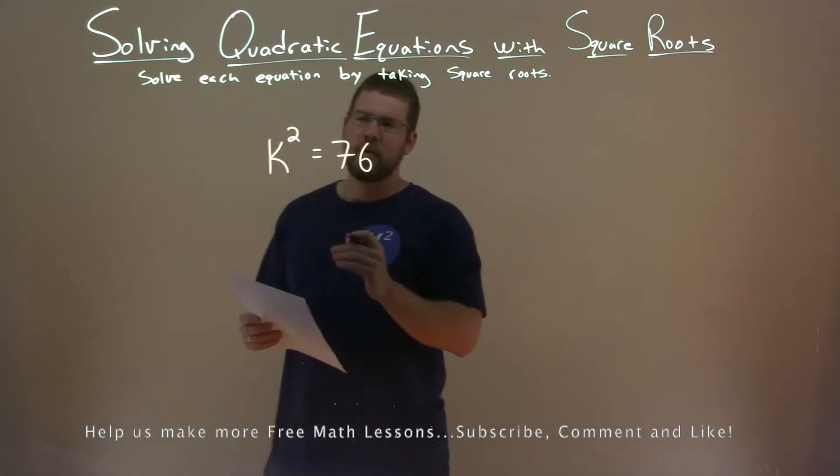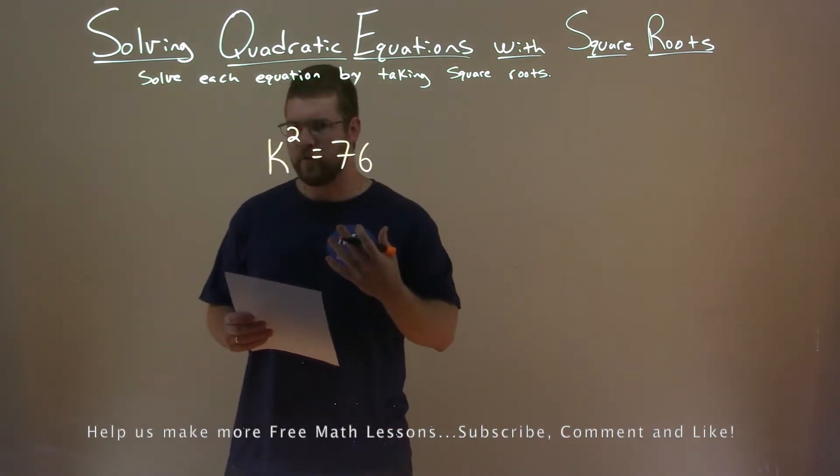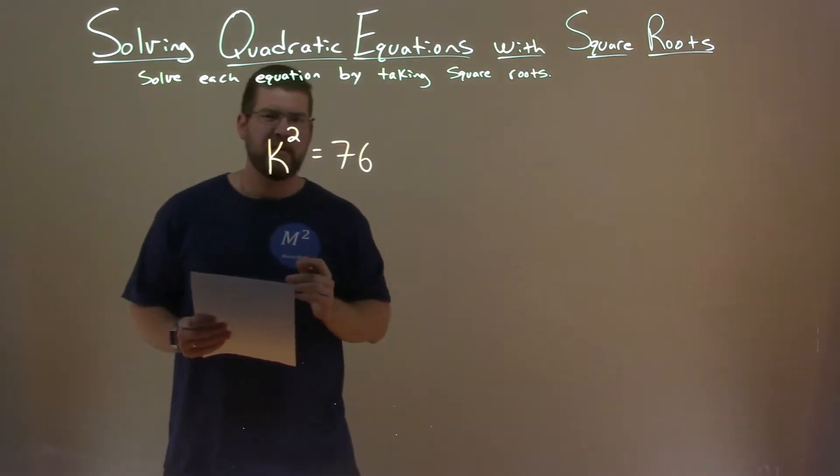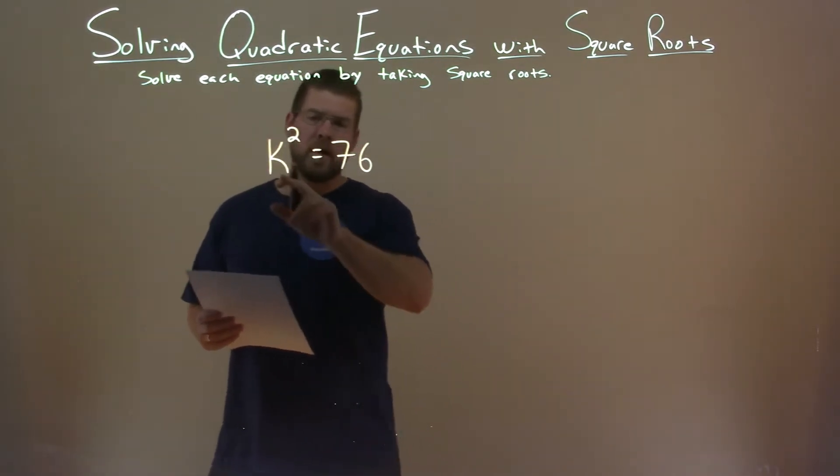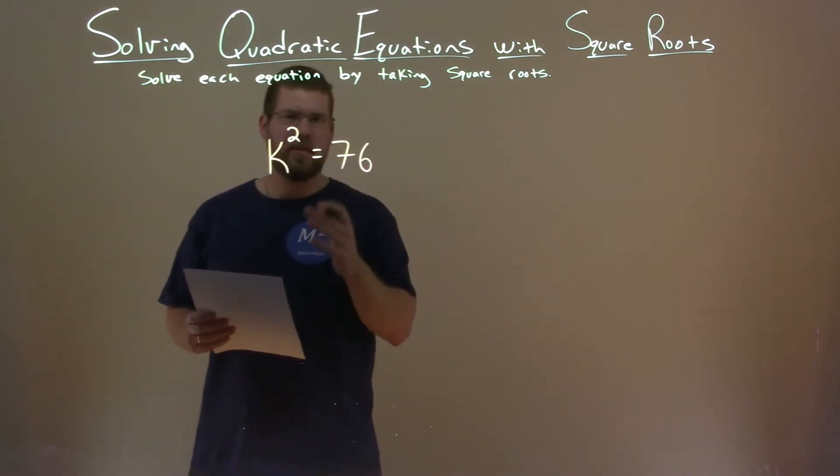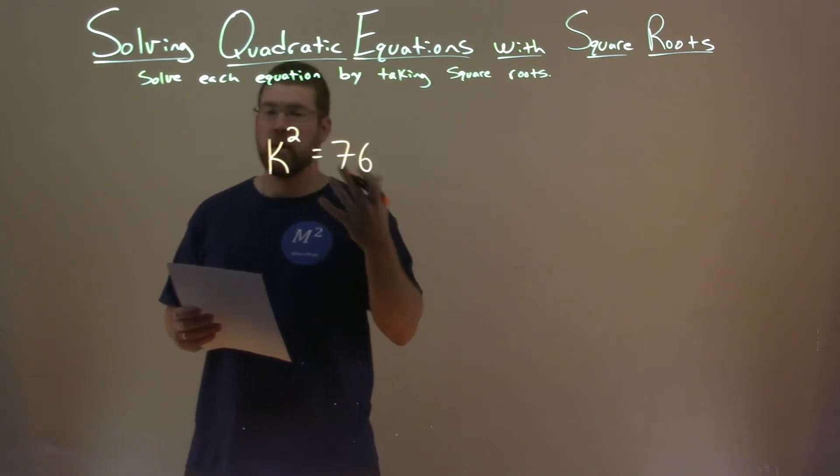So we have our variable k by itself. Well, it's squared, but it's by itself here. So this is actually a fairly simple problem. We see the k and the squared, so the opposite of squared is taking the square root.